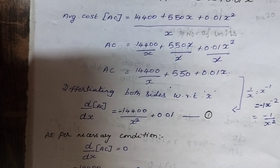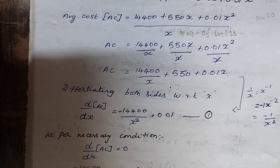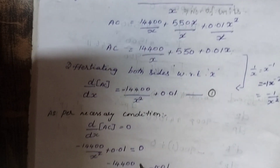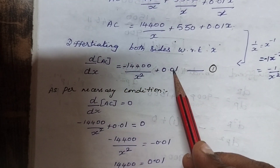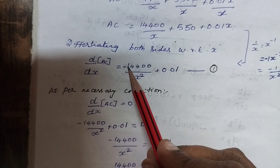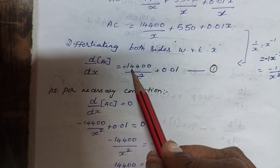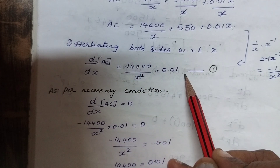Now we differentiate with respect to x — this is the first order derivative. Applying the differentiation, d(AC)/dx = −14,400/x² + 0.01.